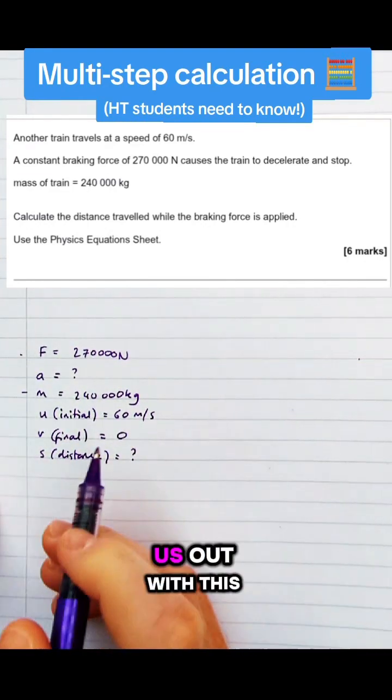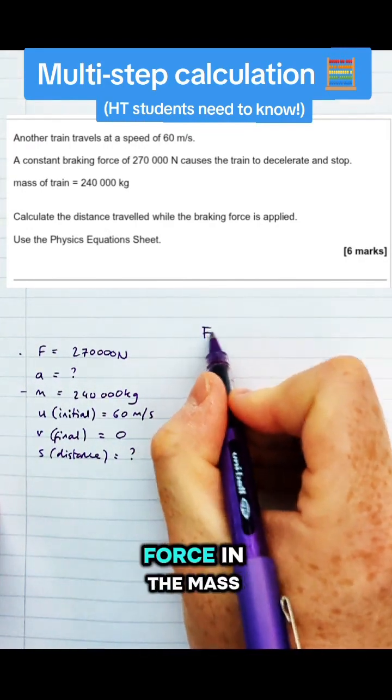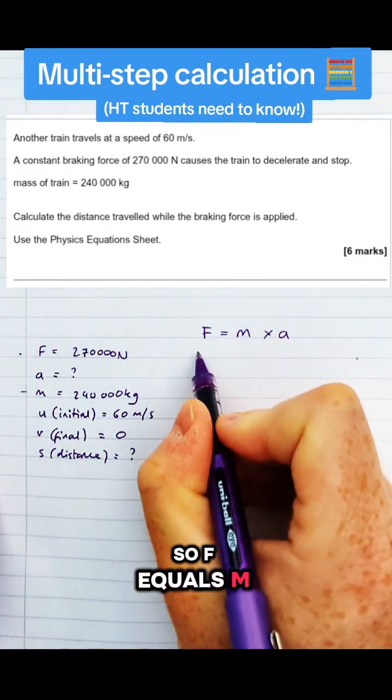So what equations could we use to help us out with this question here? There's one that should sort of jump out, if we know the force and the mass we can work out the acceleration straight away. So F equals m times a.